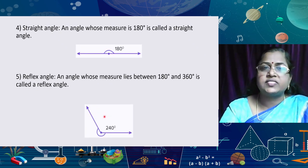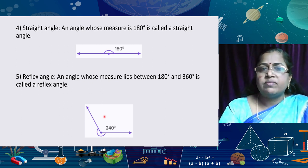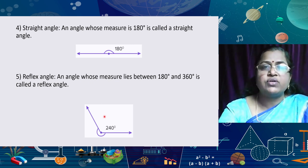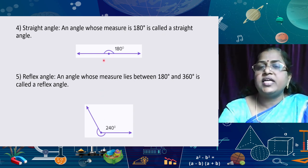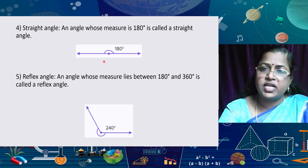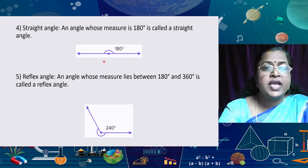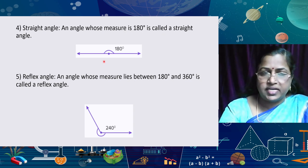Next, what about the straight angle? An angle in a straight line — the measure of a straight angle is 180 degrees. We can say a straight angle has a measure of 180 degrees. If there are three or more angles on a straight line, the sum of all those angles is 180 degrees.